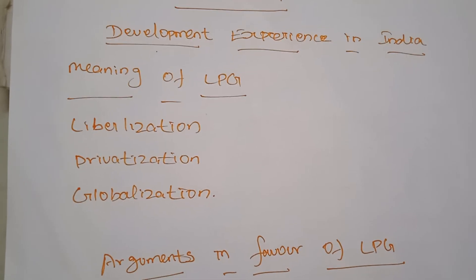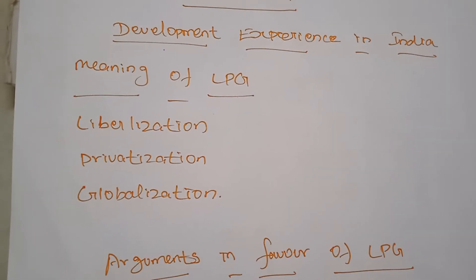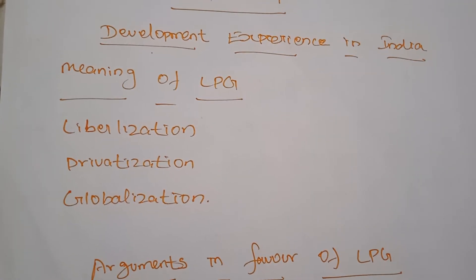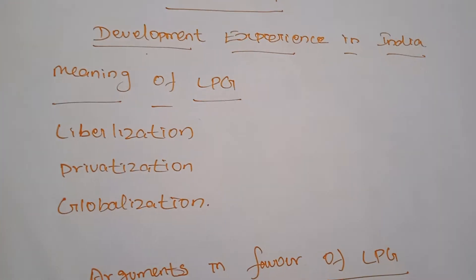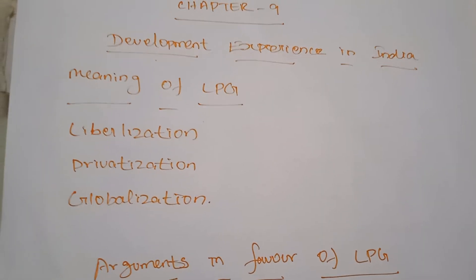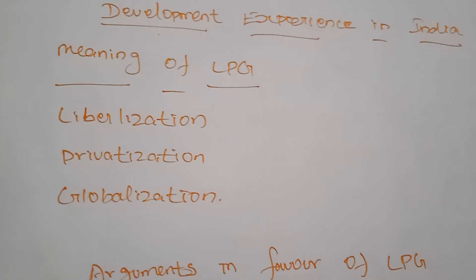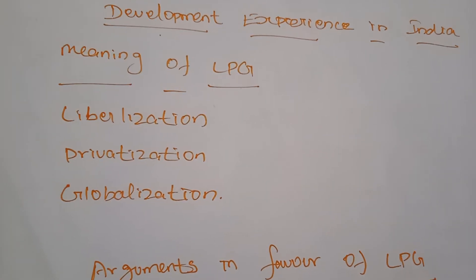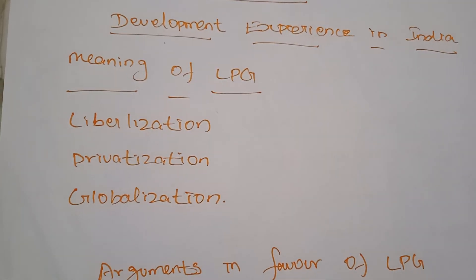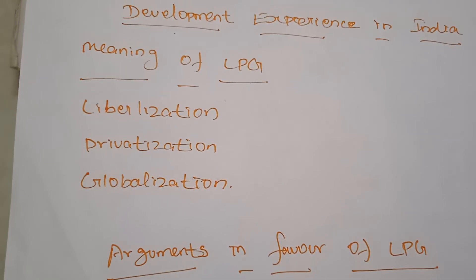The basic objective of the sixth five-year plan was poverty eradication and technological self-reliance. During the period 1982–85, several poverty eradication programs were implemented in India. The seventh five-year plan included the establishment of self-sufficiency and opportunities for productive employment. During this period, banks also increased and provided many financial facilities for small-scale and agricultural industries.